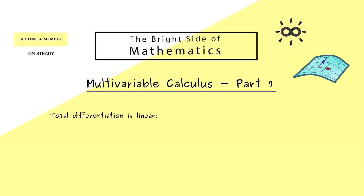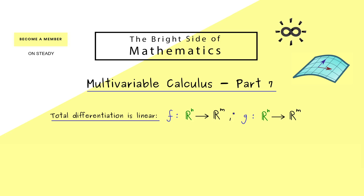Let's immediately start with the sum rule and the factor rule for the total derivative. In order to describe these two rules we have to consider two functions f and g that are totally differentiable at one point. Both functions should have n variables as the input and a vector with m components as the output. We fix a point x̃ in the domain and say that both functions are totally differentiable there. Instead of ℝⁿ we could choose an open subset of ℝⁿ as the domain, but here I want to keep it simple because the generalization is straightforward.